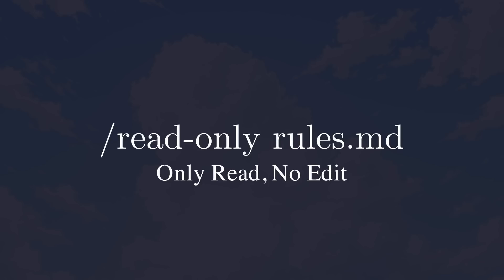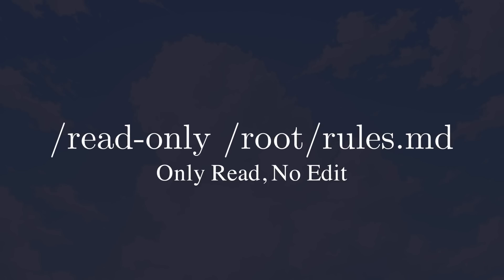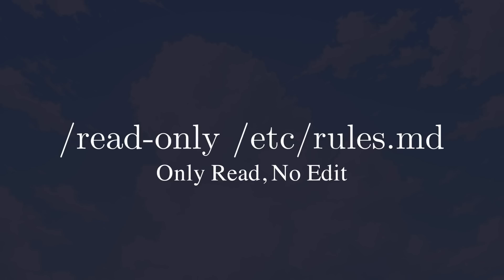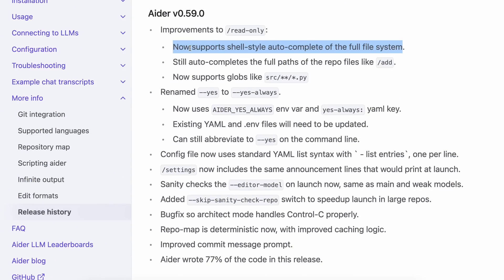Previously, you could add files within the repo in Read Only, but you couldn't add files outside of the current repo or directory. But now you can do that easily, so you can have a common file. For example, if you add markdown files for rules and don't want to keep copying files to each new project, you can now just keep the file somewhere common outside of the current project directory and add that file in Read Only. It will read that file too, which wasn't possible before. It still autocompletes for paths inside the repo or directory you're working in, just like before.